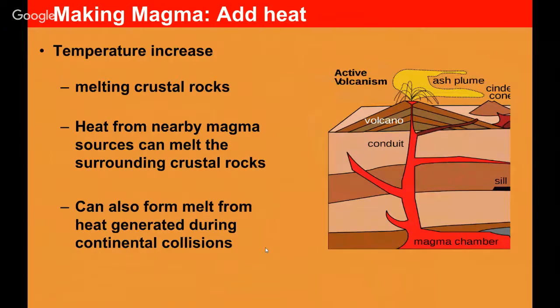Finally, last but not least, we have a temperature increase. Heat from any kind of magma source can melt a lot of the surrounding crustal rocks, and we see this not just at hot spots but also a lot in the crust. A lot of the melting related to crustal processes can be attributed to this temperature increase.